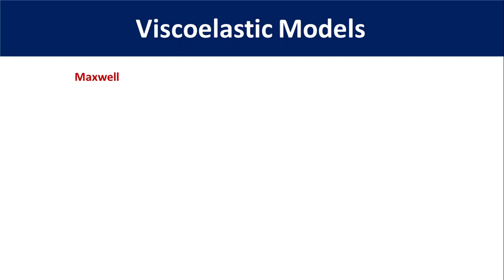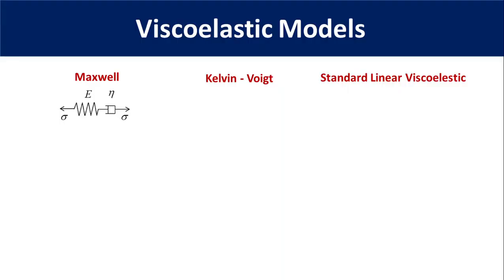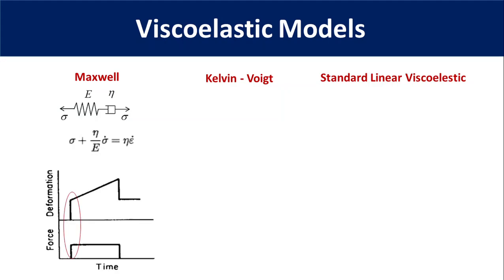Three of the most common models are the Maxwell model, the Kelvin-Voigt model, and the Standard Linear Viscoelastic model. The Maxwell model consists of a spring and a dashpot connected in series, where the spring corresponds to elastic deformation and the dashpot to viscous deformation. The creep and recovery behavior of the Maxwell model can be represented by a very simple equation as shown here. When force is applied, there is an instantaneous deformation due to stretching of the spring, and further deformation takes place due to deformation of the dashpot. Once the force is removed, the spring returns to its original shape, leading to recovery. One limitation of this model is that it does not predict creep accurately because it suggests that strain will increase linearly with time.